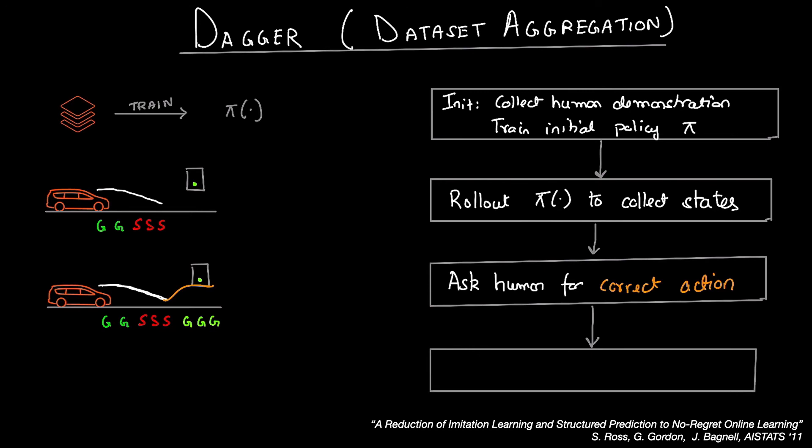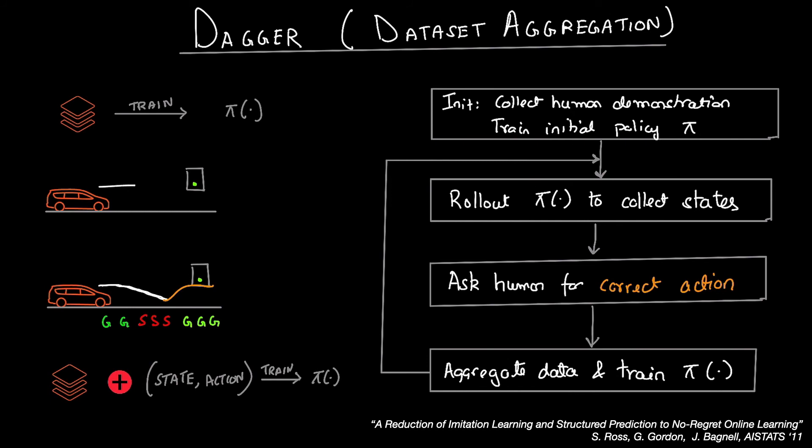Step four, finally, and this is the important bit, you aggregate data and train the policy on the aggregated data. It's important that you don't throw out old data for the theory to work. Now from step four, you go back to step one and repeat for n iterations. So in the next iteration, the robot makes less of a mistake, but still begins to stop. Again, the human corrects and teaches it to go. And if you keep repeating this, finally, there comes a point in time where the robot pretty much doesn't make a mistake and you're done.